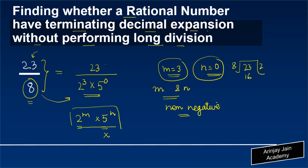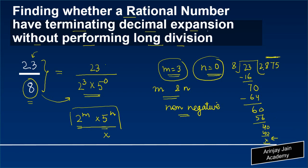Performing the long division of 23 by 8: 8 times 2 gives 16, remainder 70; 8 times 8 gives 64, remainder 6; 8 times 7 gives 56, and we reach a remainder of 0. So we have a terminating decimal expansion confirmed.